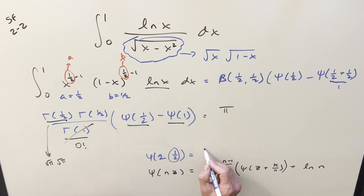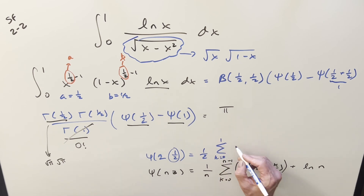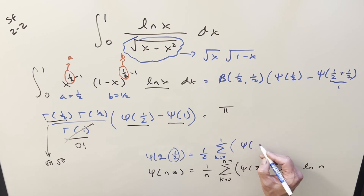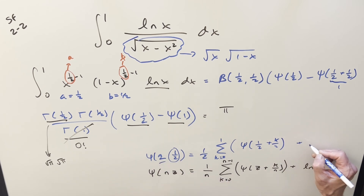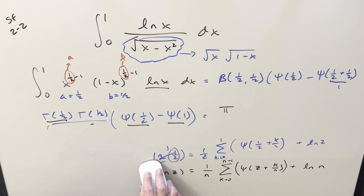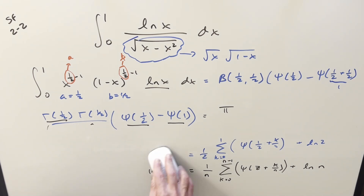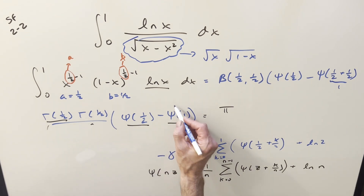On the left side, two times one half gives us one, so this becomes digamma of one. Digamma of one has the well-known value of minus the Euler-Mascheroni constant. So we write minus the Euler-Mascheroni constant on the left. On the right, when k equals zero we get digamma of one half, which is what we want, and when k equals one we get digamma of one half plus one half equals digamma of one, which again equals minus the Euler-Mascheroni constant. And we have the plus ln two term.